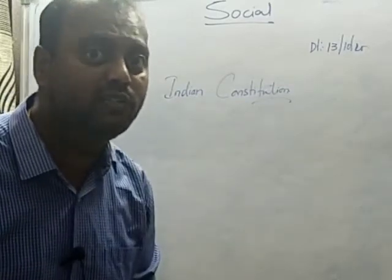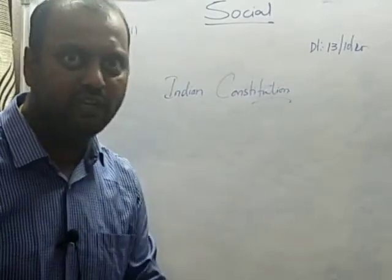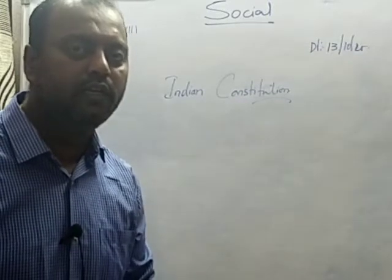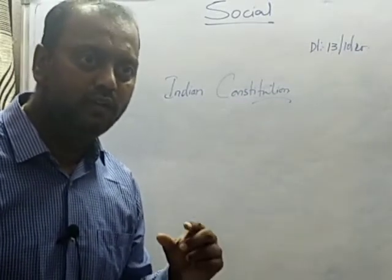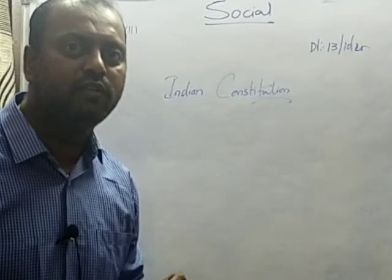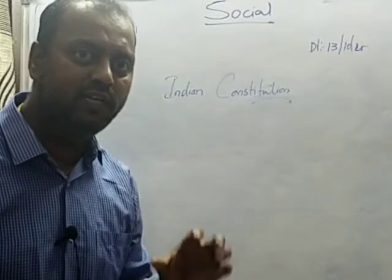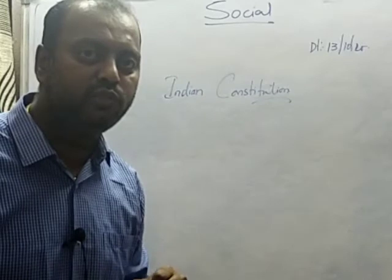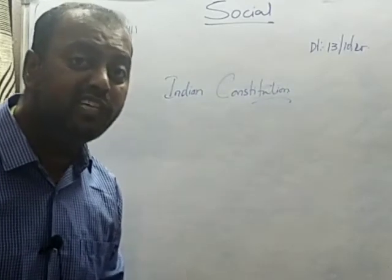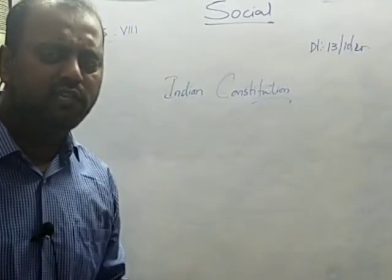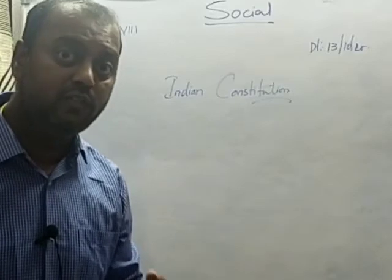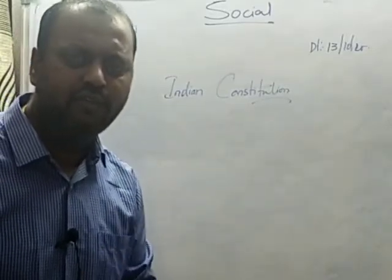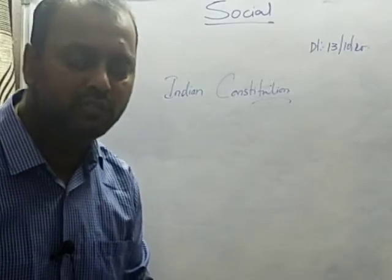How was this constitution prepared? What are the Objectives Resolution? We have studied the Objectives Resolution — the issues on which the constitution should be built, the Constituent Assembly passed a resolution on those, which is called the Objectives Resolution. And how many members are in the Constituent Assembly? 299 members, and there were very few women, like Durgabai Deshmukh.